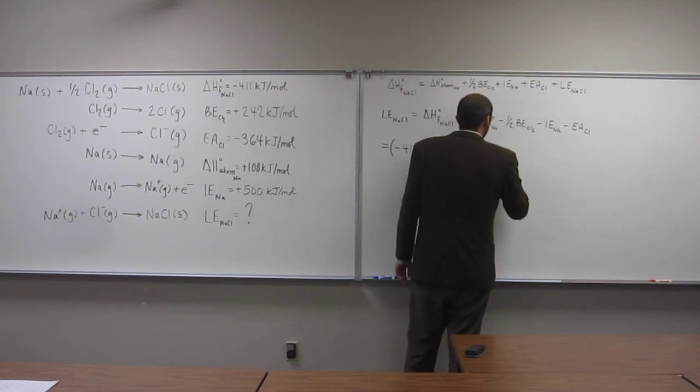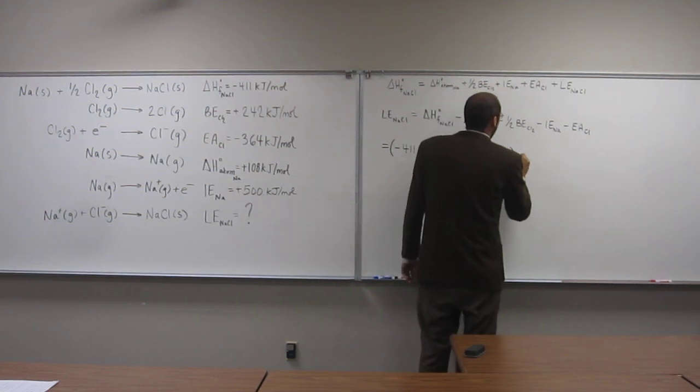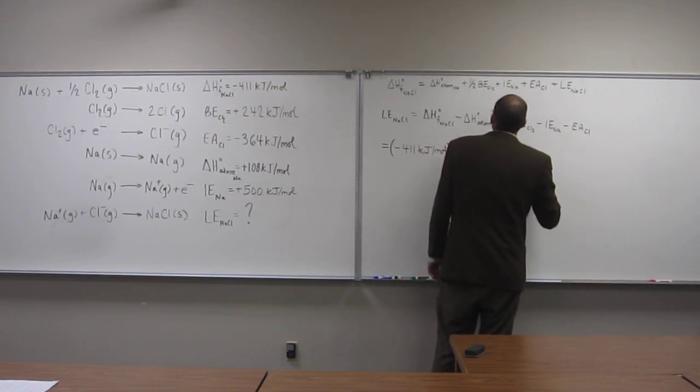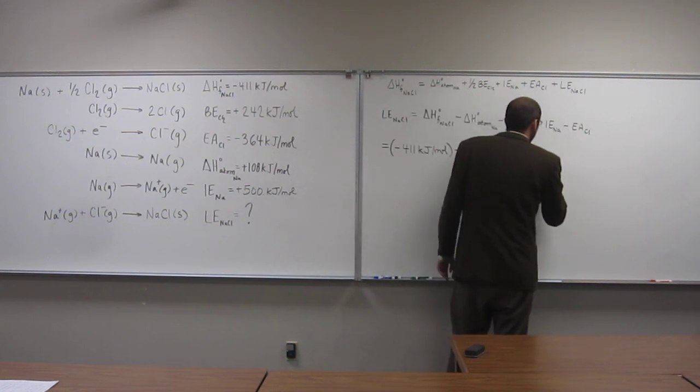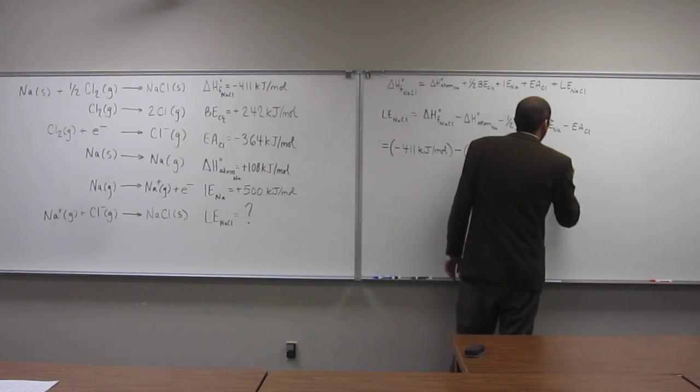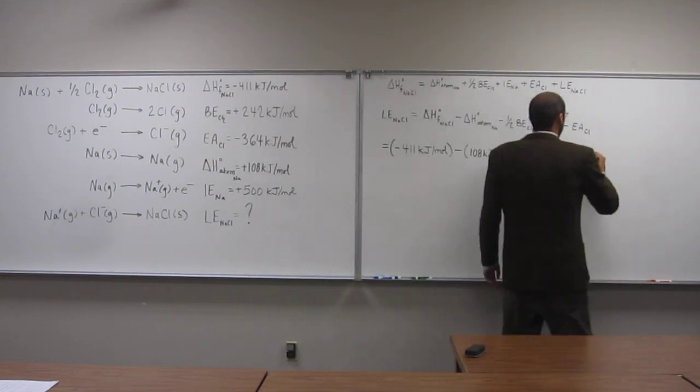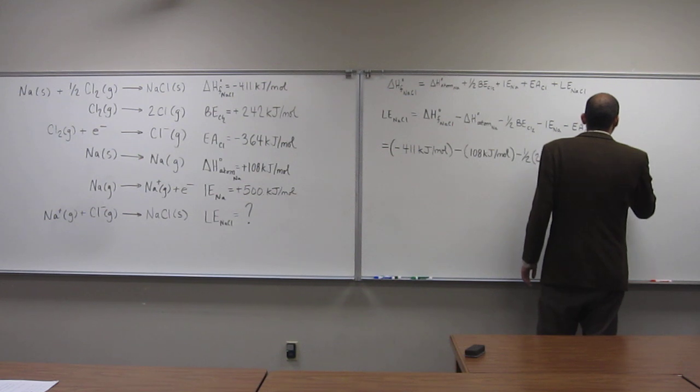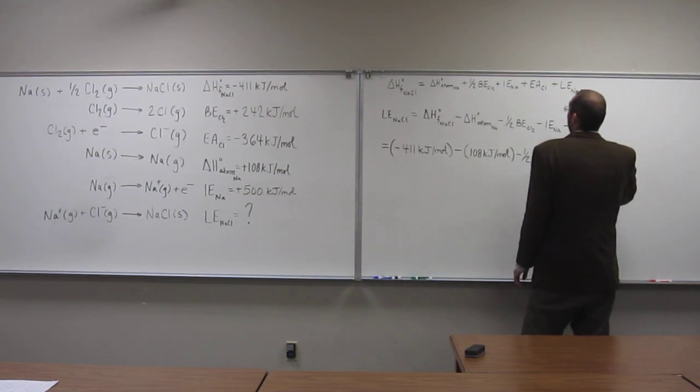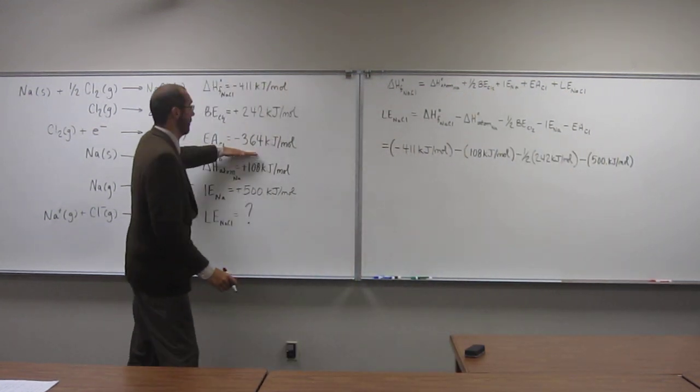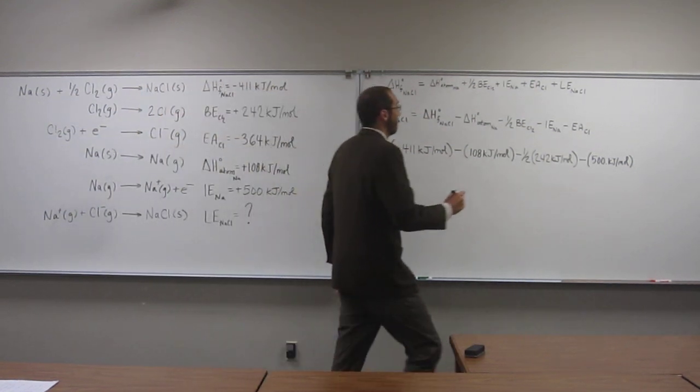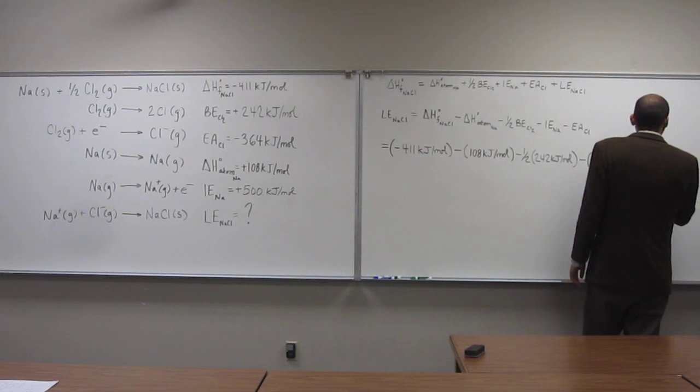108 kilojoules per mole, minus one-half times 242 kilojoules per mole for the bond energy, minus the ionization energy, 500 kilojoules per mole. And then minus the electron affinity, which is a negative number, so it's a minus a minus, minus negative 364 kilojoules per mole.